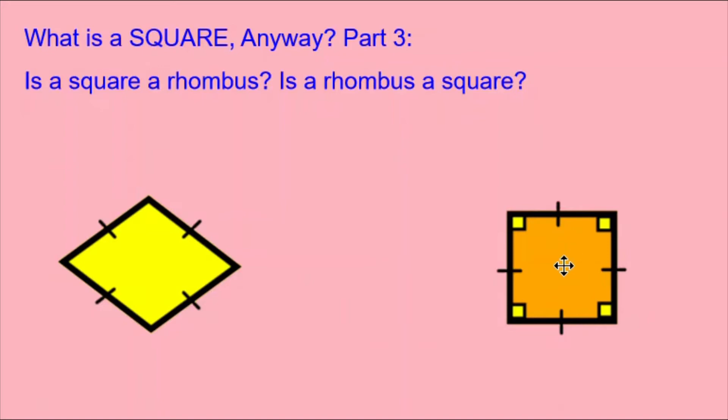Over here on the right, I have a diagram of a square that shows that it has four internal 90 degree angles, as shown by these little yellow squares in the corners. And it has four congruent sides, as shown by these little lines.